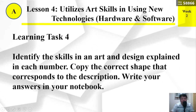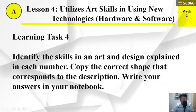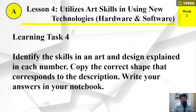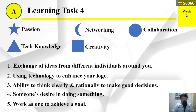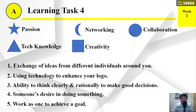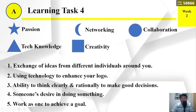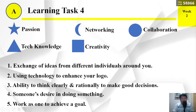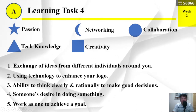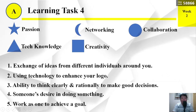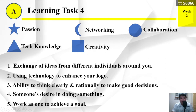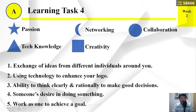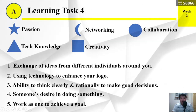Learning task number 4: identify the skills in an artwork and design explained in each number. Copy the correct shape that corresponds to the description. Write your answers in your notebook. Star — Passion; Triangle — Tech knowledge; Quarter moon — Networking; Square — Creativity; Circle — Collaboration. Number 1: exchange of ideas from different individuals around you. Number 2: using technology to enhance your logo. Number 3: ability to think clearly and rationally to make good decisions. Number 4: someone's desire in doing something. Number 5: work as one to achieve a goal.